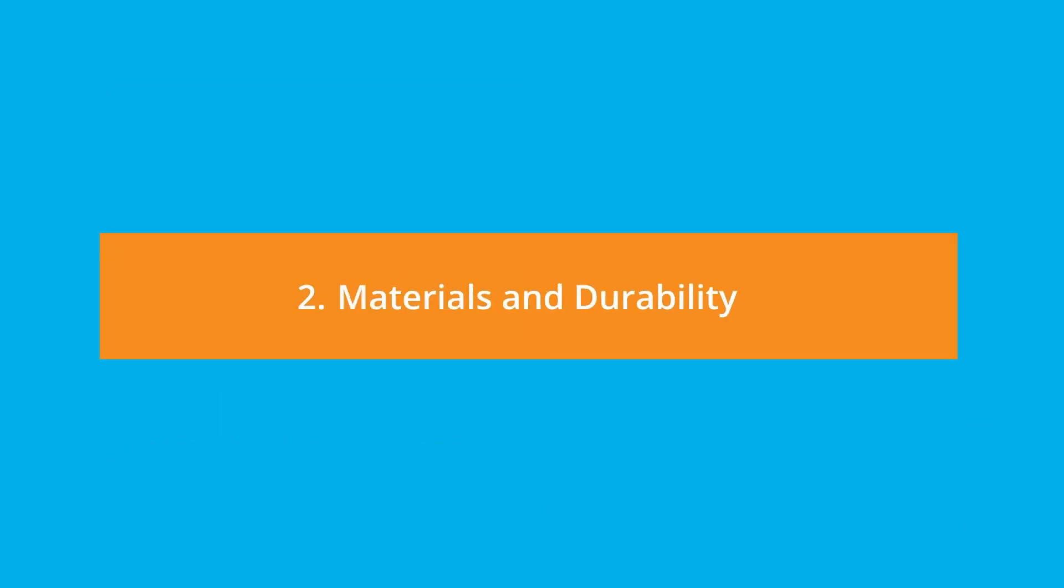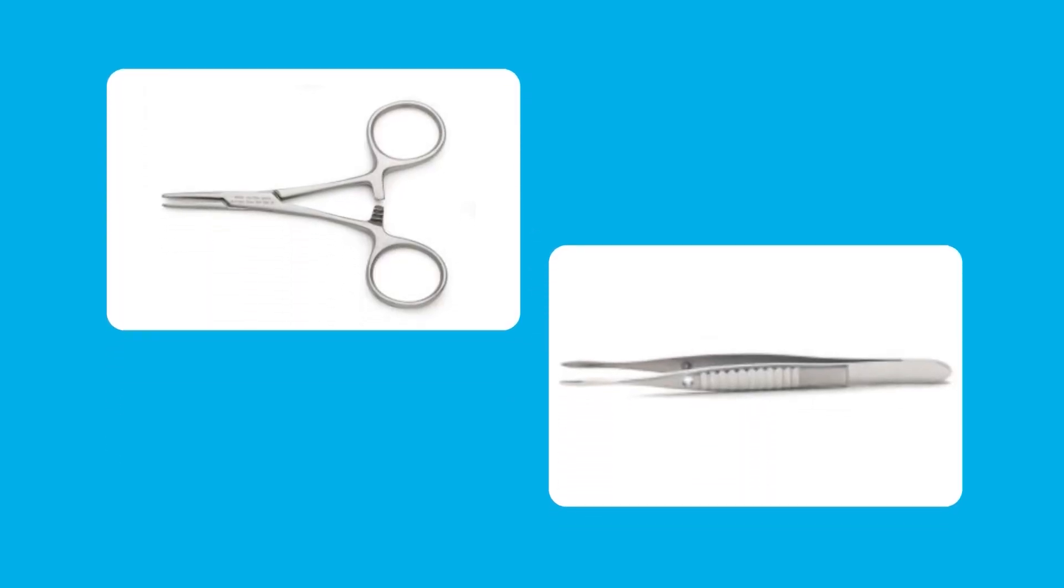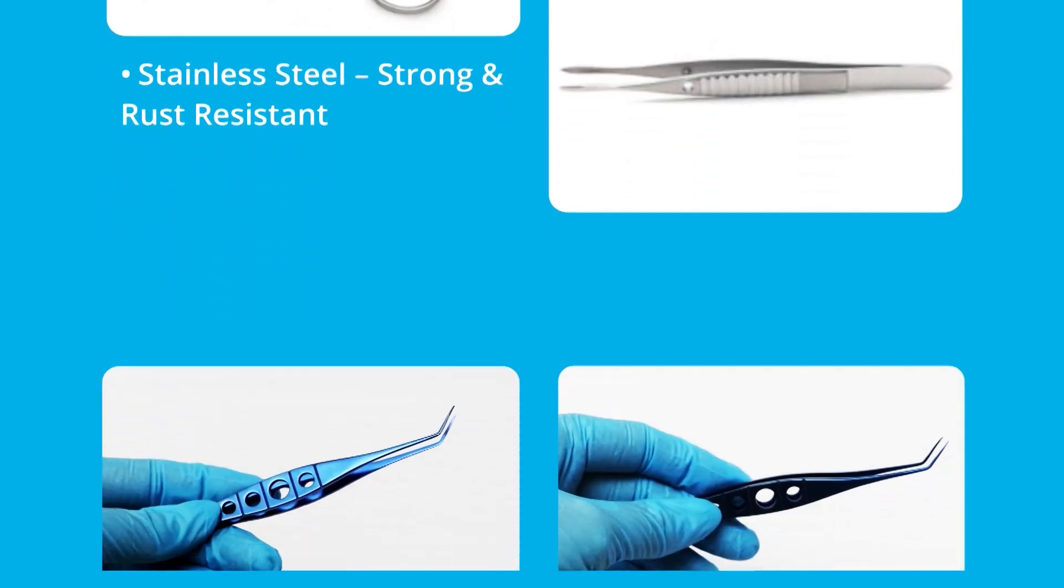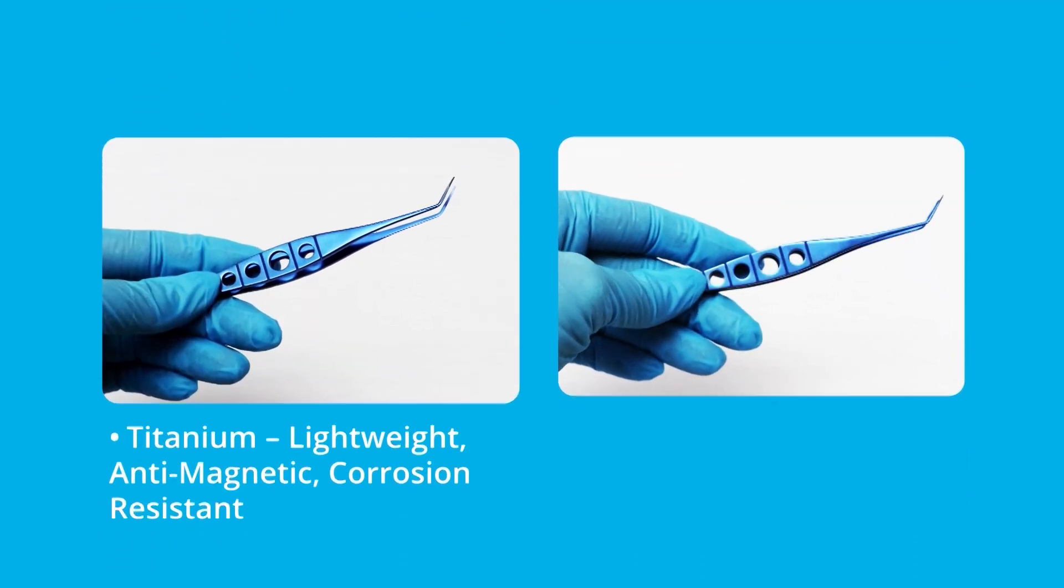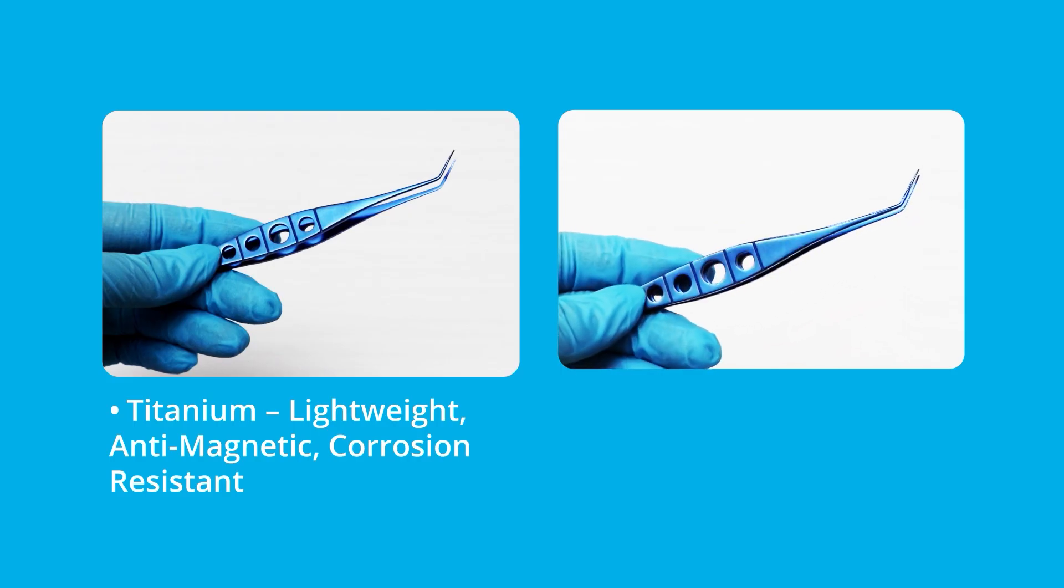Second, consider materials and durability. The construction material of forceps affects the durability, sterilizability, and corrosion resistance. Stainless steel is common for its strength and rust resistance, while German steel is a premium option for longevity. Titanium forceps are lightweight, corrosion resistant, and suitable for MRI or microscopy use.